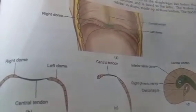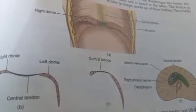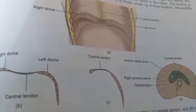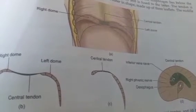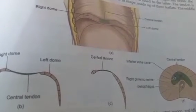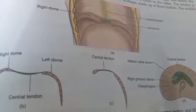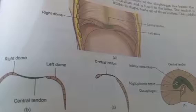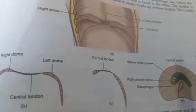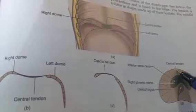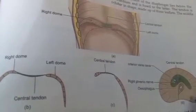The muscle fibers form the periphery. They arise from the circumference of the thoracic outlet and are inserted into the central tendon. The muscle fibers of the diaphragm are grouped into three parts: the sternal fibers, costal fibers, and the lumbar fibers.